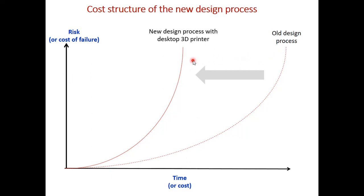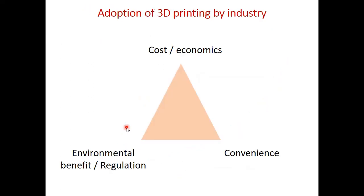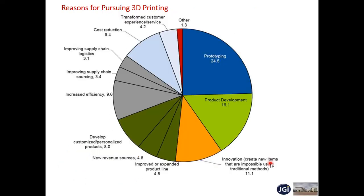Still the risk and cost of failure involved is the same because of the product. This can be further reduced provided a lot of research happens in 3D printing from a materials point of view, because the availability of metal powder for 3D printing is very less. If adopting 3D printing for any industry, it is mainly because of the cost and economics involved, environment regulations, and the convenience of use. Currently, looking at this pie chart, 3D printing is mainly used for prototyping and product development and innovation — roughly 50% — and the remaining is for improving the supply chain, increasing efficiency, some revenue generation, and other areas.